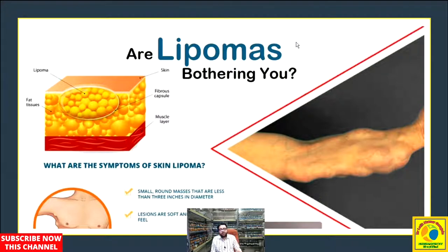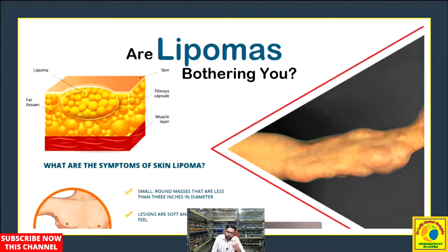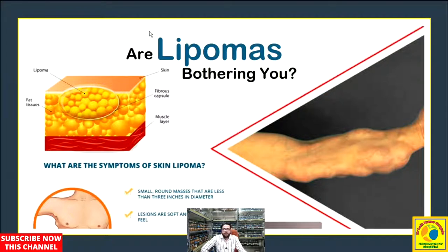Let's try to understand what a lipoma is. As the name signifies, it is composed of two words: lipo and oma. The suffix 'oma' is medically used to denote tumors — lipoma, sarcoma, carcinoma. 'Lipo' represents lipid. So a lipid-laden tumor is known as a lipoma. A tumor comprised of lipid only is known as a lipoma, and most commonly they are found on the subcutaneous part of the body.